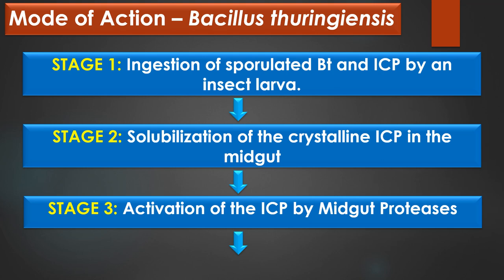Stage 3 is activation of the ICP by midgut protease enzymes. The crystalline protoxins are inactive until they are hydrolyzed by the gut proteases. The proteases cleave the amino acids from both C-terminus and N-terminus of the protoxin and thus form the active toxin.